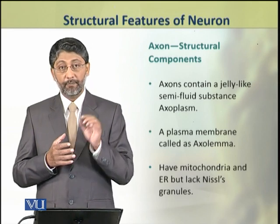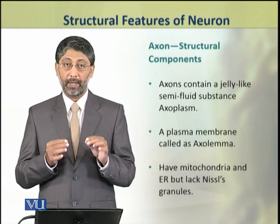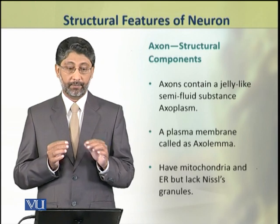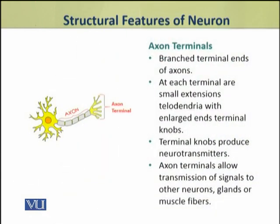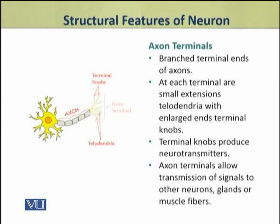Axons also have mitochondria and endoplasmic reticulum, but they lack Nissl bodies. The axons end at branched terminals. These terminals have small extensions which are called telodendria. The telodendria are the places where neurotransmitters are released. Axon terminals allow the transmission of signals to other neurons, or to the glands or muscle fibers to which the neuron is attached.